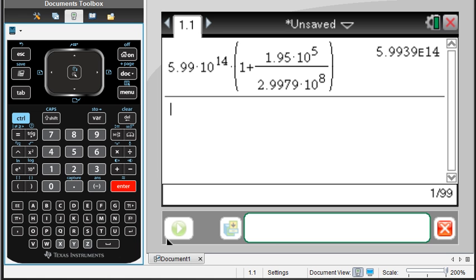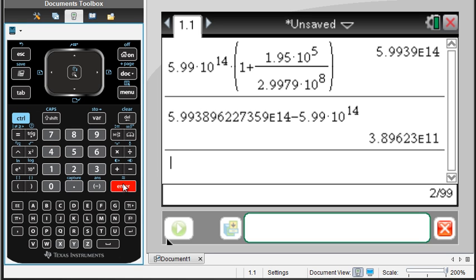Going back to the calculator, we've got answer minus 5.99 times 10 to the 14th. And that is going to give us 3.8962 to the 11th.